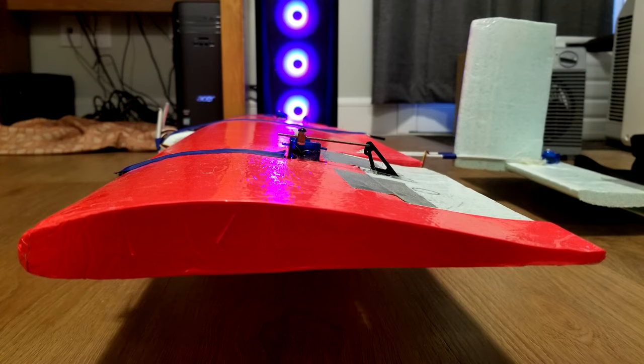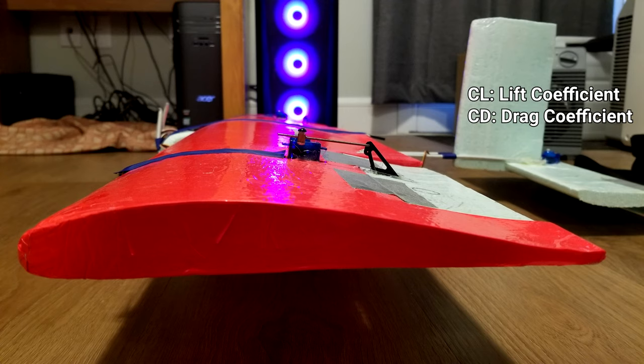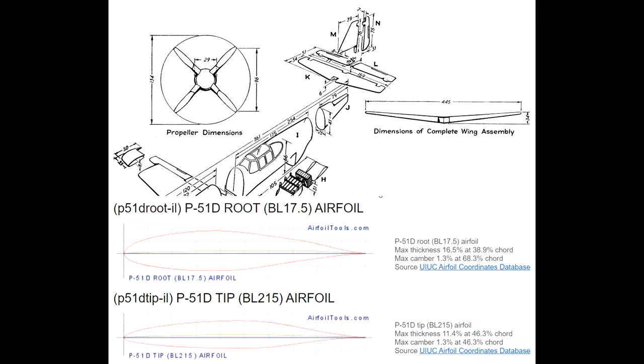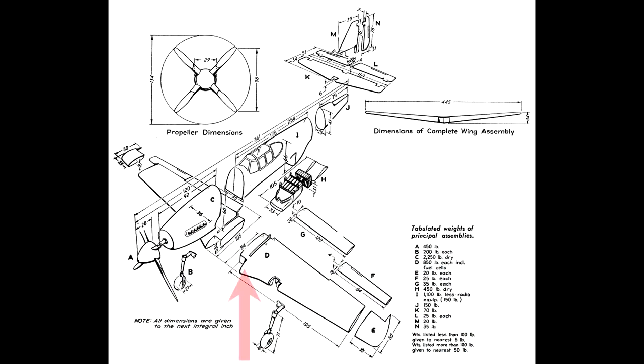This brings us to the concept of lift coefficient and drag coefficient. There's nothing complicated about these coefficients, they are just useful to compare airfoils between them. Here we have the airfoils for the root and tip of the P51D. As the name implies, the root airfoil is at the junction between the fuselage and the wing, and the tip airfoil is at the tip of the wing.